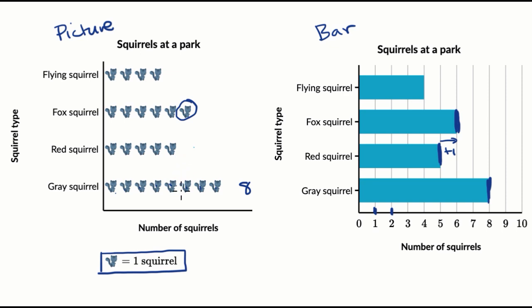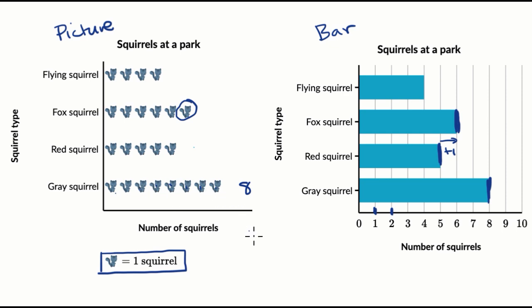Both picture and bar graphs can be good ways of thinking about the quantities you see. They're good for making comparisons, for figuring out just how many of something you see, or what the difference is, or even the total of different categories — here, it's the squirrel types.